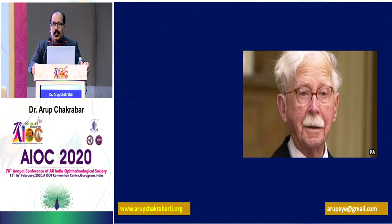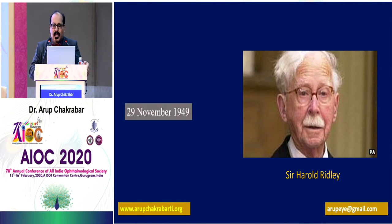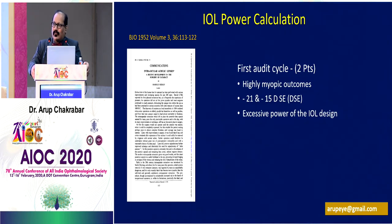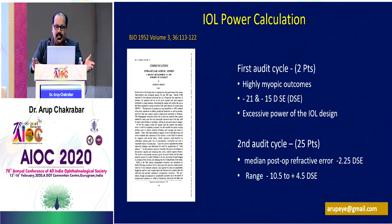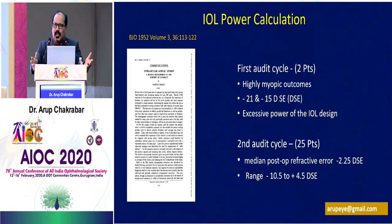Sir Harold Ridley implanted the first intraocular lens on 29 November 1949. His published results in two audit cycles in BJJO 1952 were striking. The first audit cycle had two patients — one with minus 21 diopters and another with minus 15 diopters of myopic outcome, which is not acceptable today. They fixed the problem with the lens manufacturer, the Rayner company. In the next audit cycle of 25 patients, the median post-operative refractive error was minus 2.25 diopters spherical equivalent, with a range of minus 10.5 to plus 4.5 diopters. So when we started IOL implantation, we were doing good surgery but not hitting the bullseye most of the time.